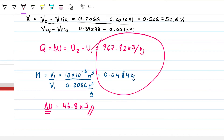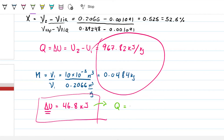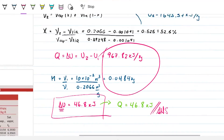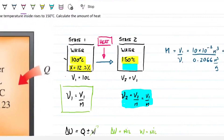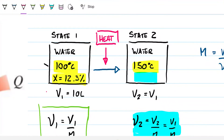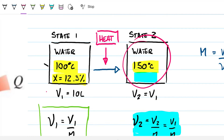That 46.8 kilojoules is not just delta U — because of the first law of thermodynamics, it also equals the amount of heat given to the system. So if you have a state at 100°C and 12.3 percent quality and you want to raise it to 150°C in a rigid tank without changing its volume, you need to supply 46.8 kilojoules. This takes you from a saturated mixture with 12.3% vapor by mass to one with about 52.5% vapor.